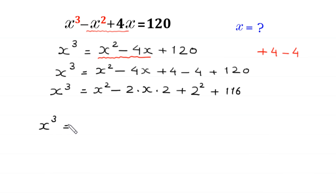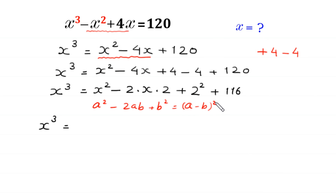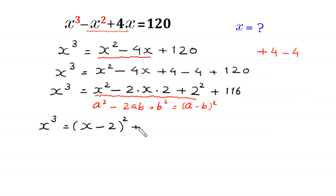By using the algebraic identity a squared minus 2ab plus b squared equals (a minus b) squared, we can write x squared minus 2 times x times 2 plus 2 squared as (x minus 2) squared plus 116.